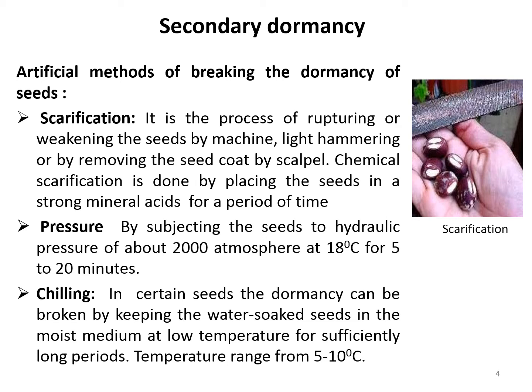Another method is chilling. In certain seeds, dormancy can be broken by keeping water-soaked seeds in moist media at very low temperature for a sufficiently long period. In nature, this requirement is fulfilled by the winter season. It can be done artificially by placing seeds in layers of wet moss, cotton, or sand and keeping them at a low temperature ranging from 5 to 10°C. This process is called stratification.